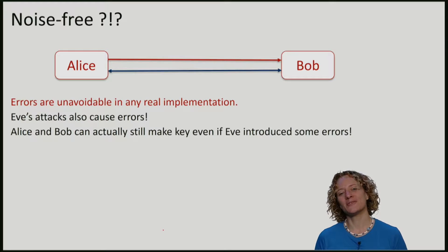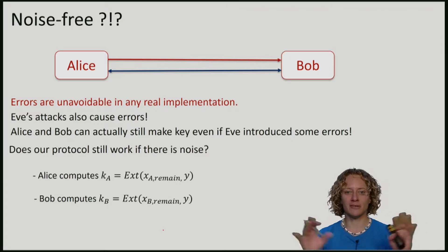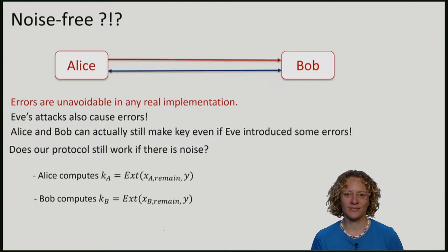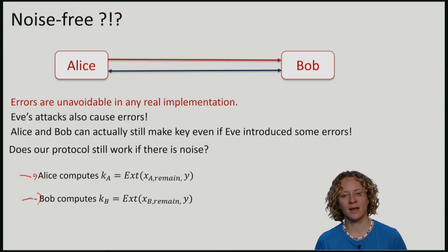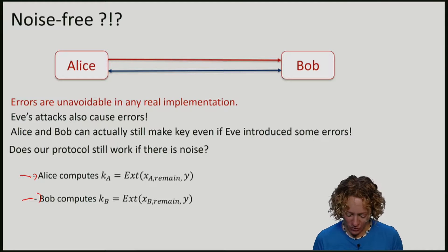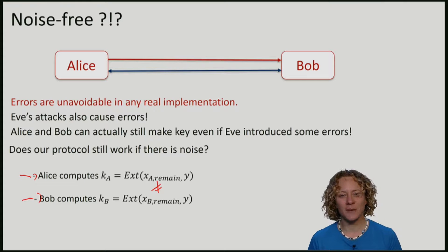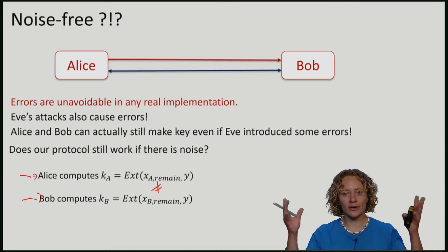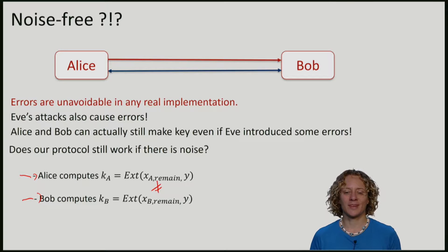It turns out that Alice and Bob can actually still make a key even if Eve introduces some — but not too many — errors. Maybe the protocol still works if we just skip the abort step. But now, because there is an error on the channel, the two remaining strings will very likely not be the same. In fact, if there is even a tiny bit of noise and the string is very long, the probability that they are the same is very small. So just like in our key distribution protocol on the special channel, we now need to add an extra step: error correction.